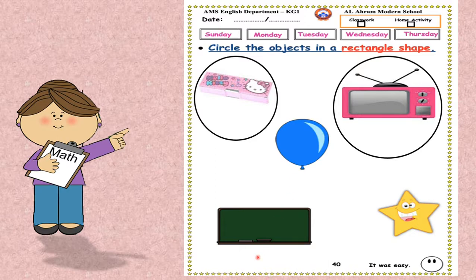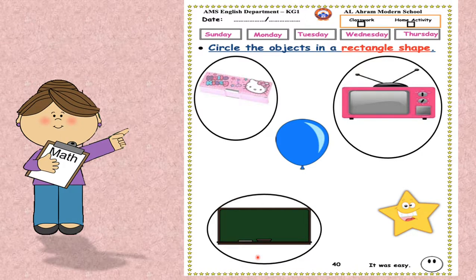Look at the board. Is it a rectangle shape? Yes. Circle around the board. Look at this shape. Is it a rectangle shape? No, so we are going to leave it.